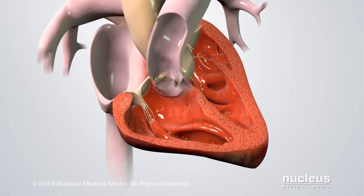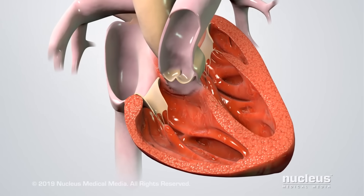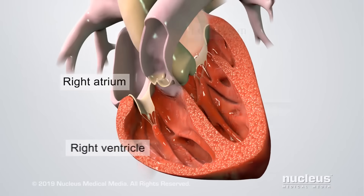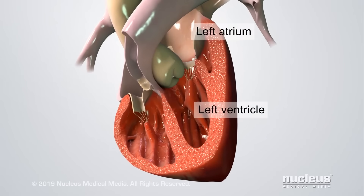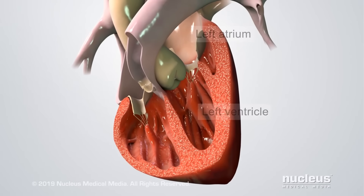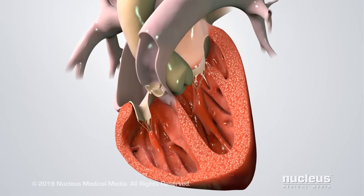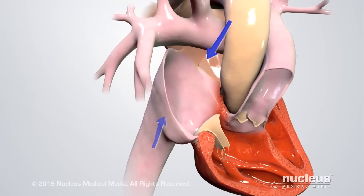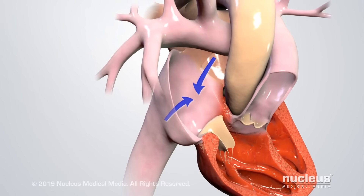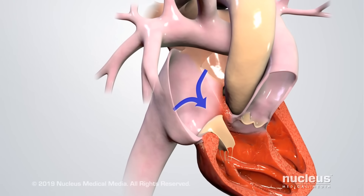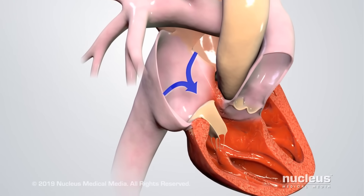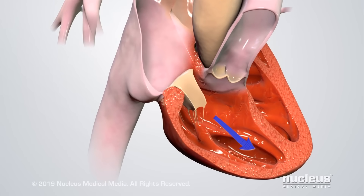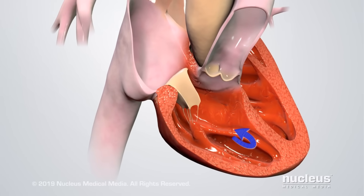A healthy heart has four chambers: the right atrium and right ventricle, and the left atrium and left ventricle. After delivering oxygen to the body, oxygen-poor blood flows into the right atrium. When the right atrium contracts, it loads blood into the relaxed right ventricle.